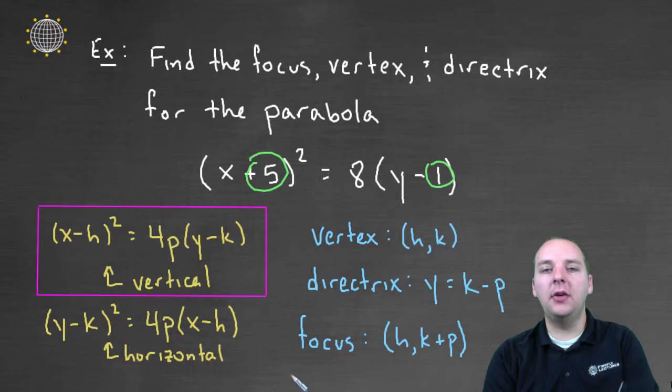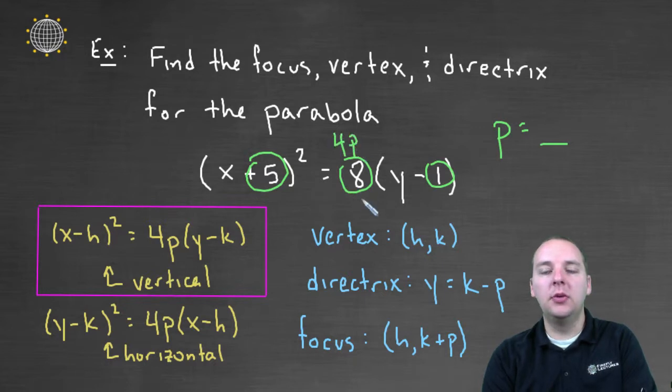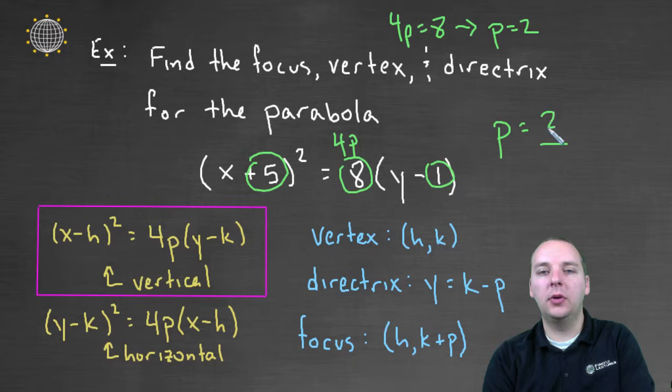What's p? Well, I know that this term right here is supposed to be 4p. So if 4p equals 8, if 4p equals 8, then that must imply that p is 2. Alright, p is 2.